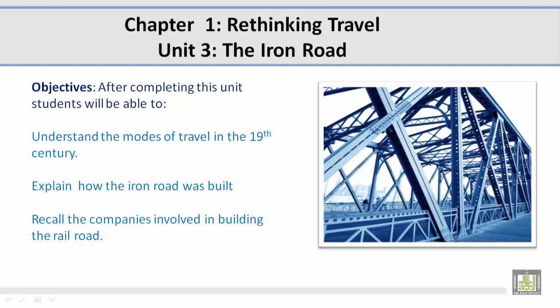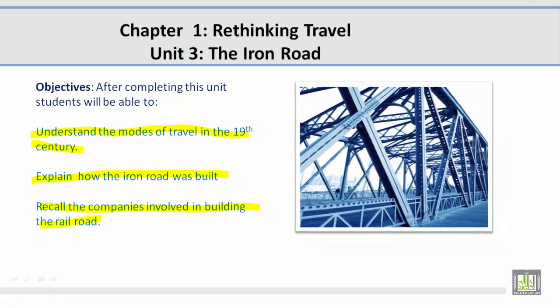Objectives. After completing this unit, students will be able to understand the modes of travel in the 19th century, explain how the Iron Road was built, and recall the companies involved in building the railroad.